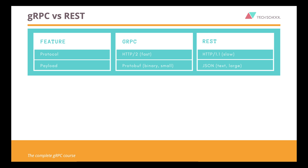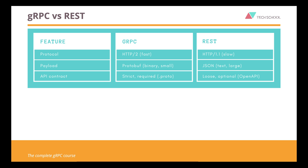Second, gRPC uses protocol buffer to serialize payload data, which is binary and smaller, while REST uses JSON, which is text and larger. The API contract in gRPC is strict and required to be clearly defined in the proto file, while in REST it's often loose and optional. We can define it via OpenAPI if we want, but it's not mandatory.